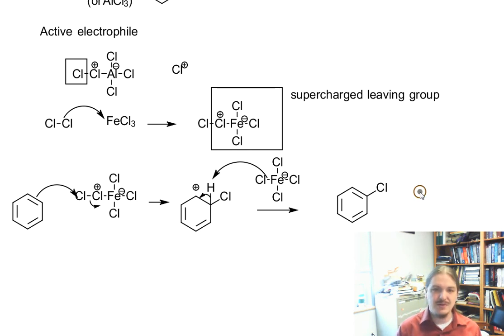and this reaction, if you do it in the lab, generates hydrogen chloride gas depending on the solvent, will bubble up out and you have to trap it or something. And it actually regenerates the Lewis acid catalyst. So you don't need to use a whole stoichiometric equivalent of the iron chloride or aluminum chloride.